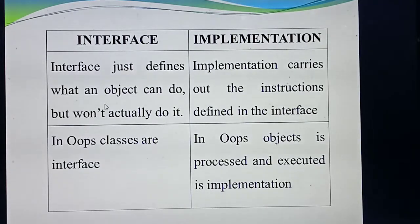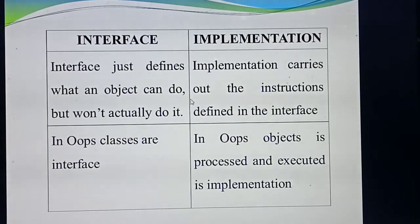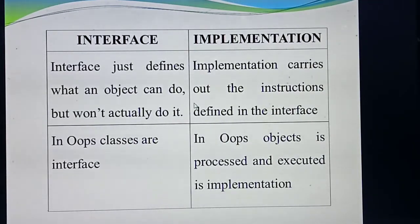Implementation is just the opposite of interface. Implementation carries out the instructions defined in the interface. Same example: if you are buying any electronic item, you will get one guide. In that guide, they give a lot of instructions — that is called implementation. Interface explains only the washing machine's use in general; implementation explains from A to Z — what's the use of the dryer, the spinner, each button. It will explain from top to bottom. That is the difference between interface and implementation.